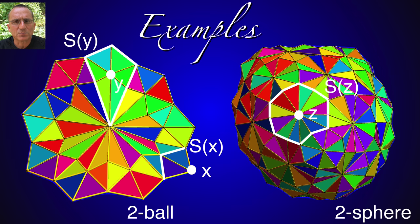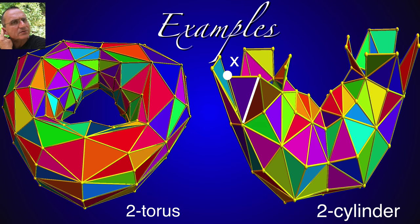Here are two more examples. You see in each case the graph is organized dimensionally. Every unit sphere is either a one ball or a one sphere. To the left we see a discrete two torus. To the right a discrete cylinder.